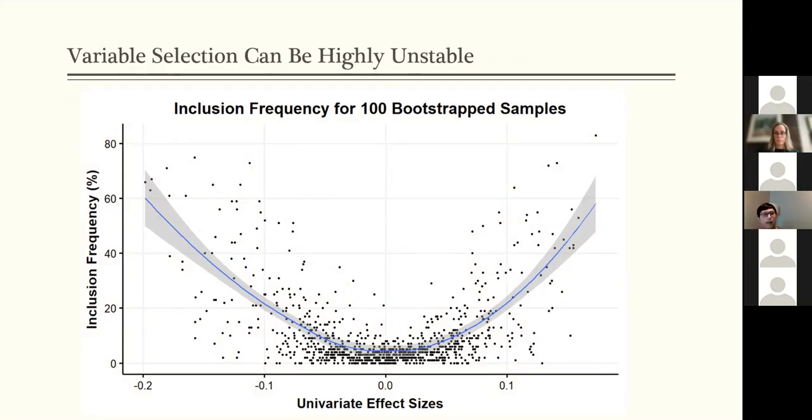But at any given effect size, we can see that there's a lot of variation in this inclusion frequency, which means that a different sample can give you a very different model just by chance alone.